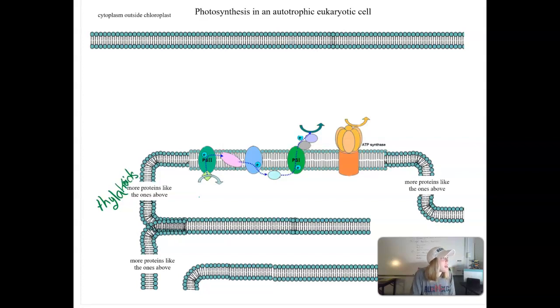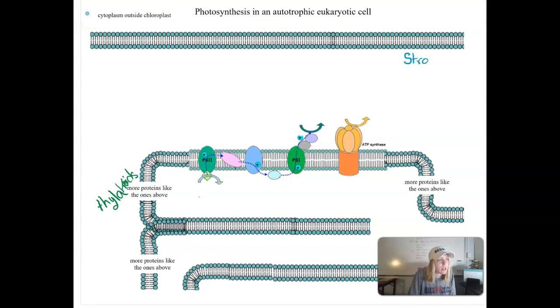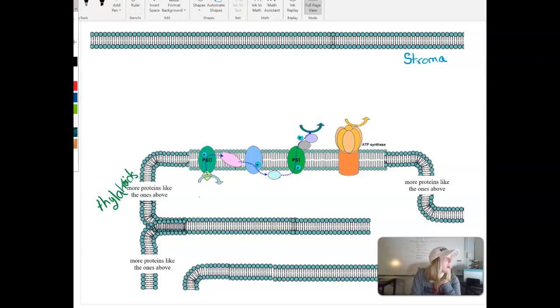That makes this outer section, which would be a fluid jelly-like consistency, the stroma, which we will see is where the light-independent reactions are occurring. So be able to identify the main internal structures and now the other thing I want you all to be able to do before we get started is to write the summary equation for photosynthesis towards the top of your poster.